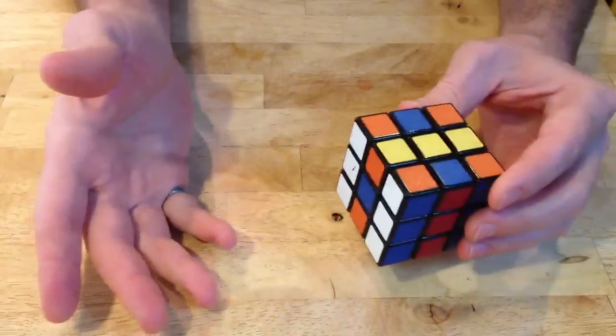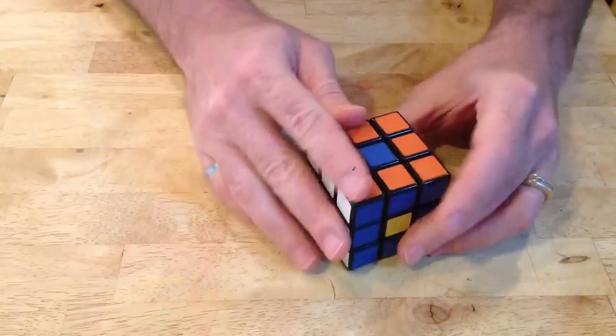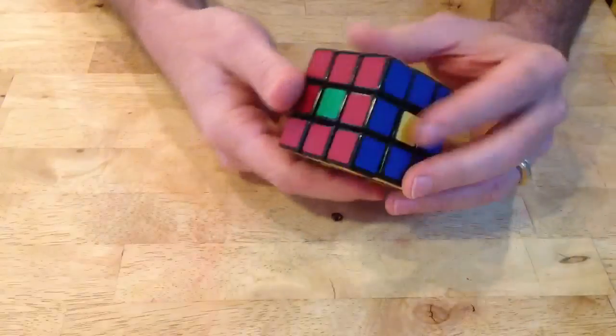After you've done that, you're just going to undo the two moves you did. So I'm going to take that one back up, take this one back over, and that's it. Very simple. Four easy moves.